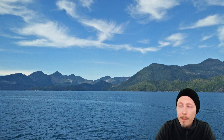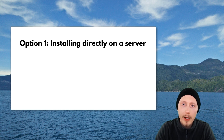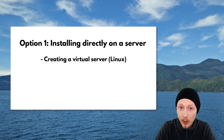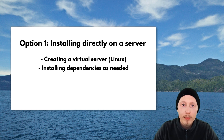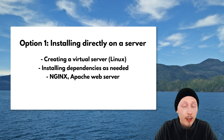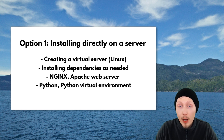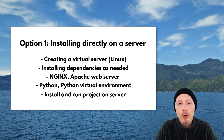The first option is installing directly on a server. This works by creating a virtual server, typically a Linux server, and then installing all the dependencies you need for your Django application. This could include things like NGINX or Apache web server, the correct version of Python, and a Python virtual environment, and then you just install your project on the server and run it.